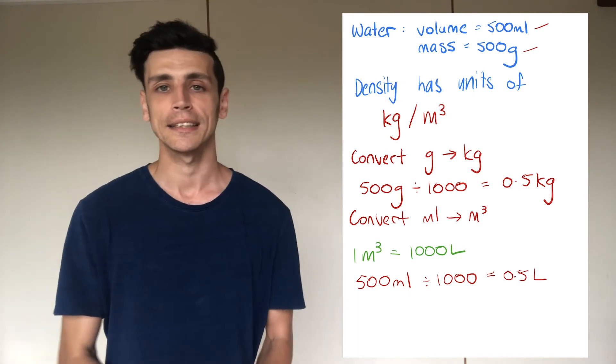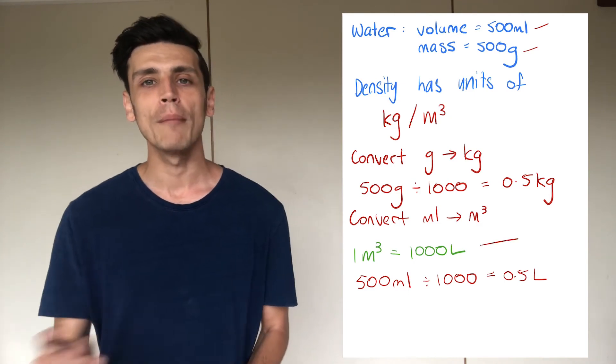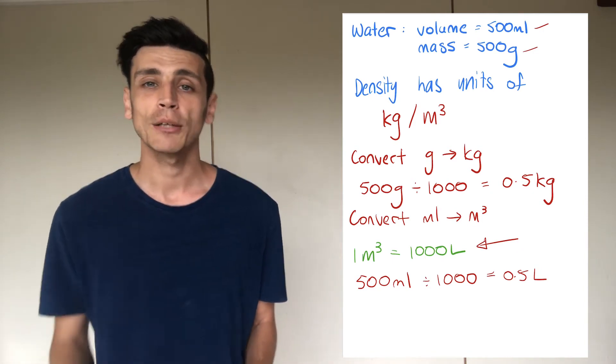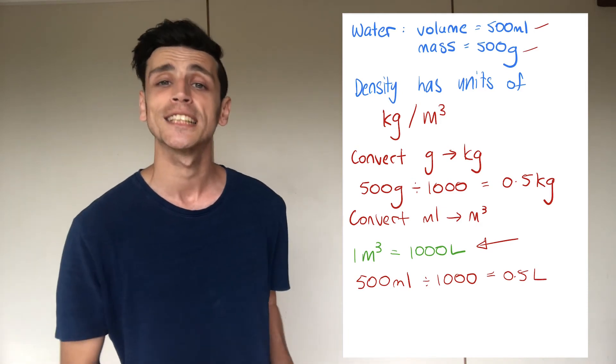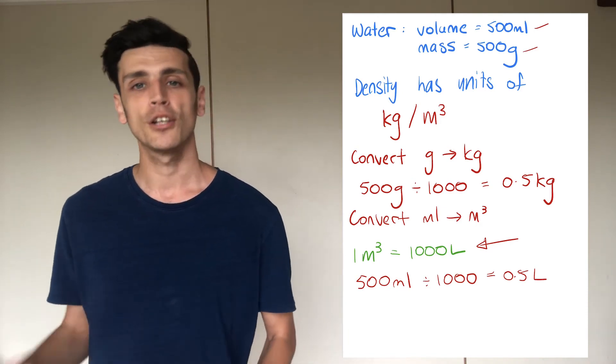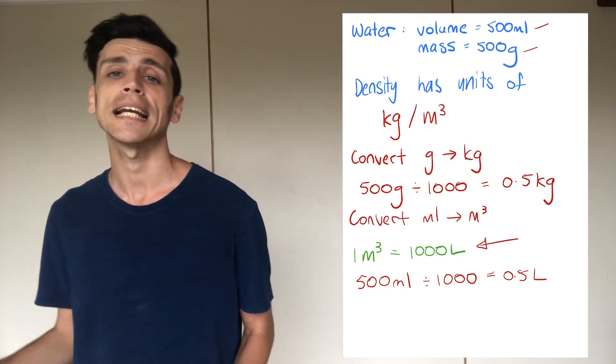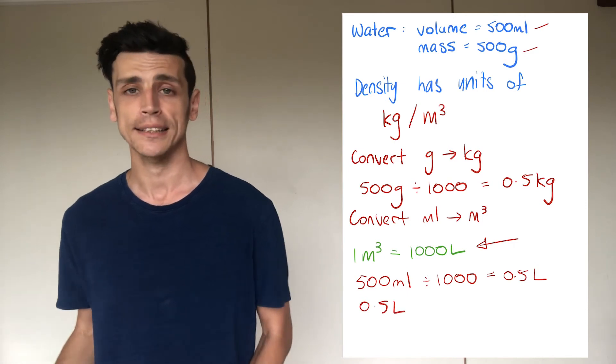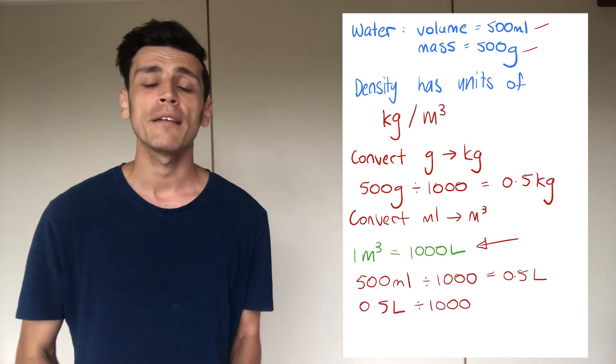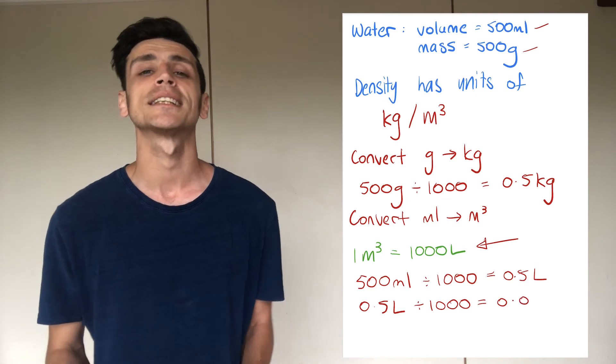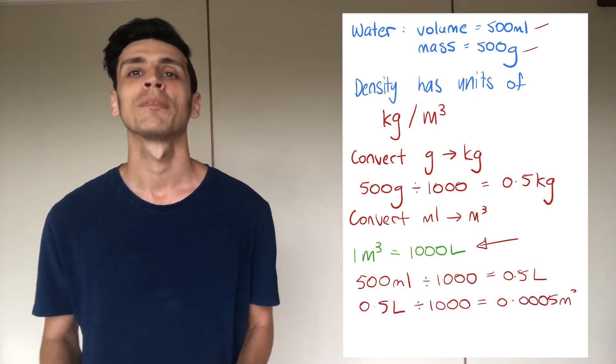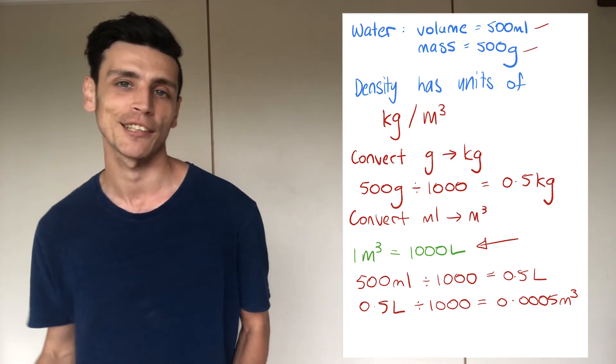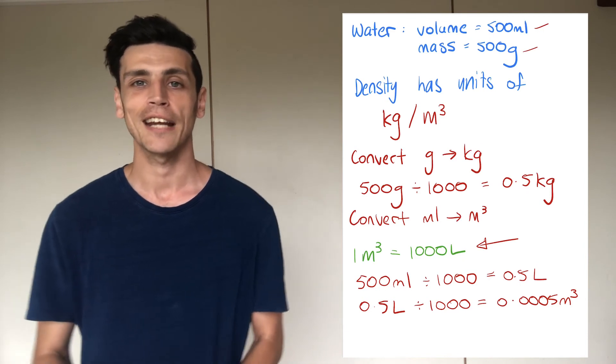Now remember that with a cubic meter there are a thousand liters so we're actually doing the same conversion again if we want to change liters into cubic meters because there are a thousand liters in a cubic meter. So again what we do is we take our liters and we divide by a thousand. So 0.5 divided by a thousand is going to give us 0.0005 cubic meters.